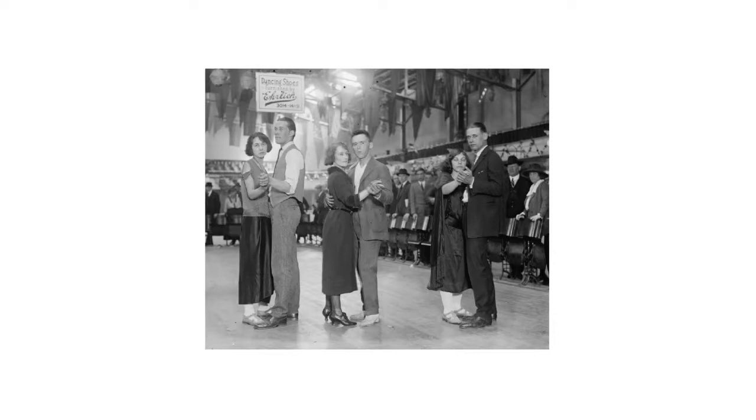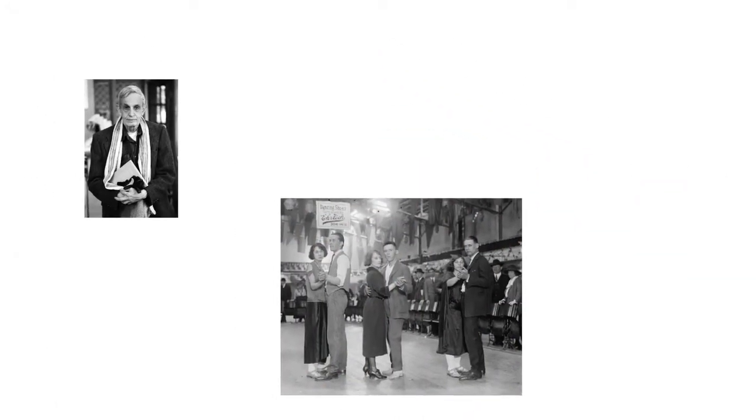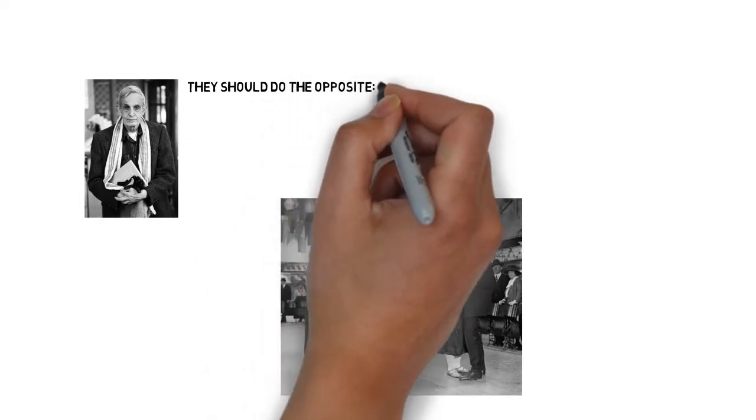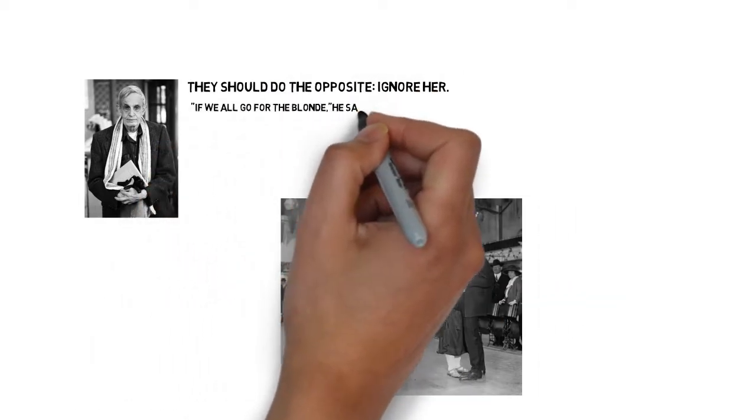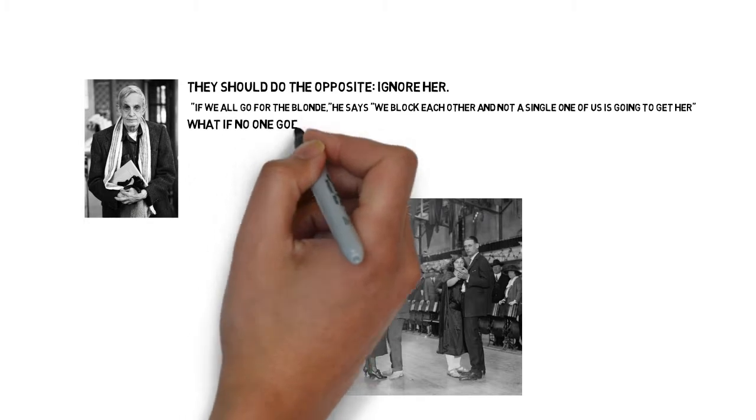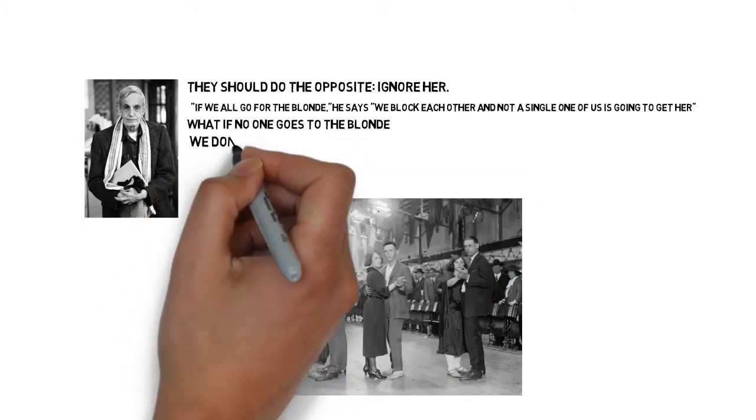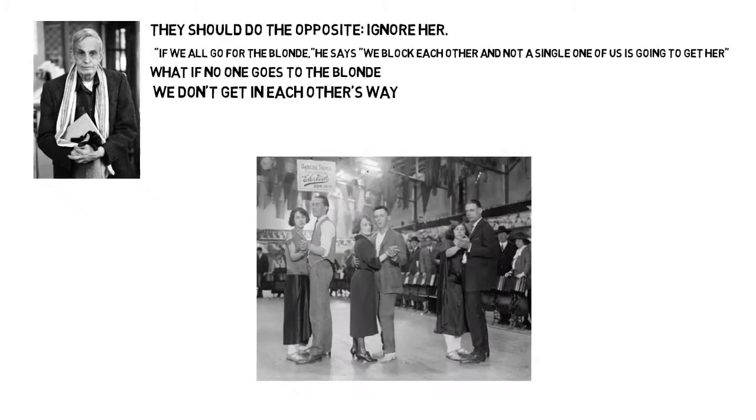While his friends ponder about which of them would successfully win the blonde, Dr. Nash concludes they should do the opposite: ignore her. If we all go for the blonde, he says, we block each other and not a single one of us is going to get her. So then we go for her friends, but they will give us the cold shoulder, because nobody likes to be second choice. But what if no one goes for the blonde? We don't get in each other's way, and we don't insult the other girls. This is the only way we win.